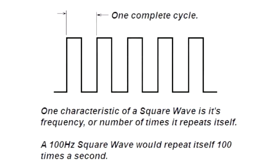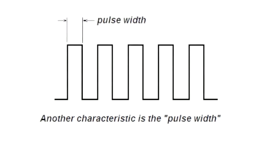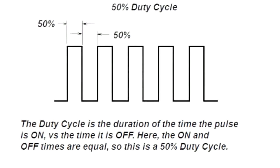And one important characteristic of a square wave is its frequency or the number of times that repeats itself. For example, a 100 hertz square wave would repeat itself 100 times a second. Another important characteristic is the Pulse Width. The Pulse Width is the on duration of each individual cycle within the square wave.